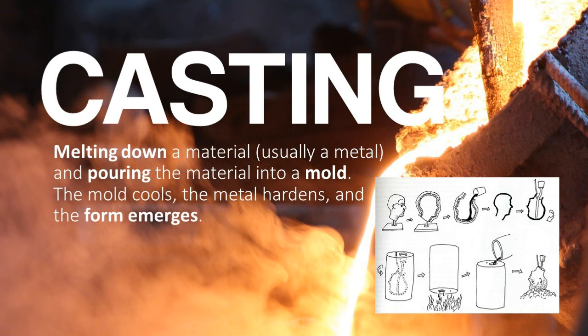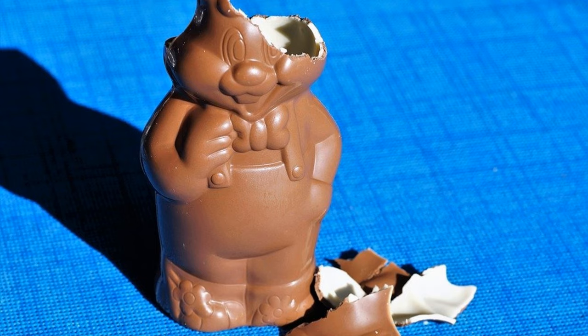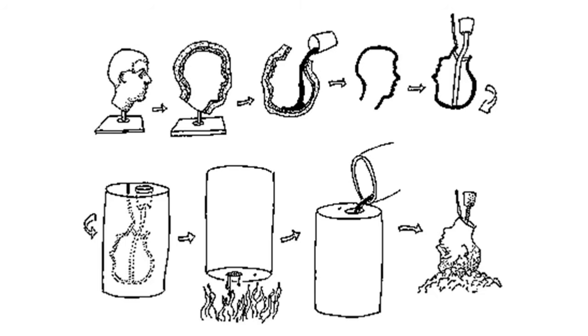Lastly, there's casting. This is when a material — usually a metal — is melted down and poured into a mold. When the mold cools and the metal hardens, you have a form that emerges. We see sculpture made in molds all the time, from plaster decor to chocolate Easter bunnies. Molds are an economic way to create a form without it being completely solid. Bronze casting has been going on for a long time — it was used a lot by the ancient Greeks, and you can see it used to create famous works like Rodin's Thinker.